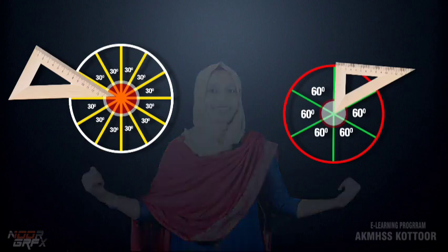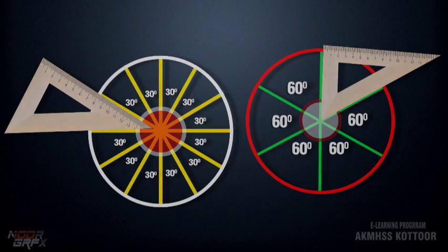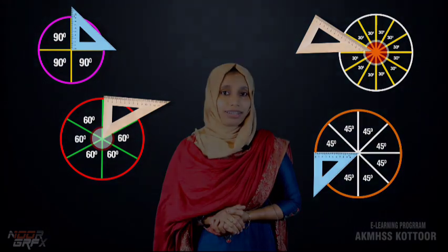Likewise, by using the other set square, we can divide a circle into 12 or 6 equal parts. Now you are clear about the angles of the set square and how to divide into 4, 6, 8, and 12 equal parts using corners of the set square.